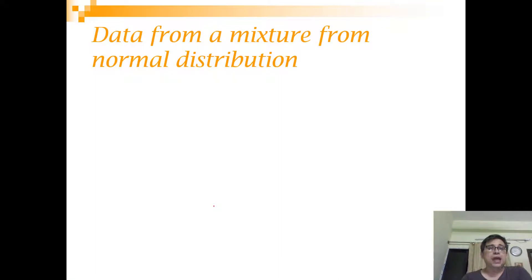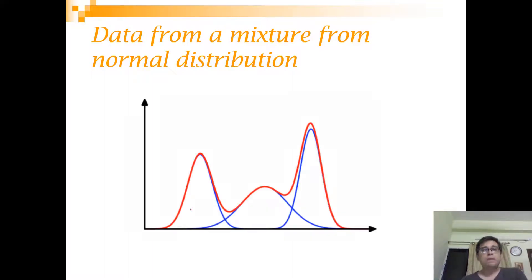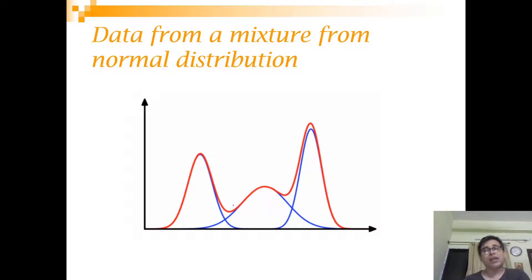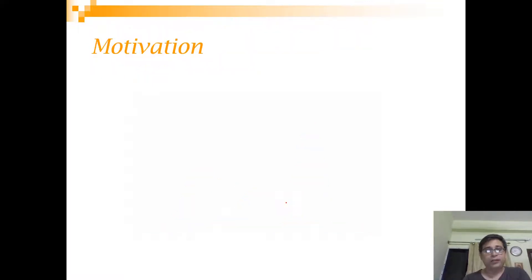Let's understand what we mean by data coming from a mixture of normal distributions. Maybe there are three normal distributions, the ones marked in blue. When you apply a mixture of these three, this is the shape of the curve you get — this is your actual data. What we are essentially trying to do is find the parameters of these individual blue distributions, which gives us an idea about the mixture model.